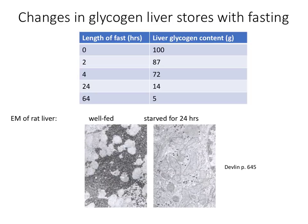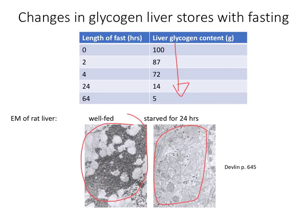Since the role of liver glycogen is to maintain blood glucose levels during fasting, it should come as no surprise that the liver concentration of glycogen decreases as we fast. In the image shown, we see that in a well-fed animal there is lots of glycogen — all these black dots — in the liver, whereas after a period of fasting or starvation, there is far less visible glycogen.